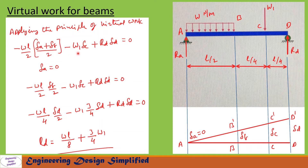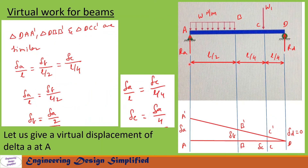Now let us write the virtual work equation: −w·(L/2) × (average displacement = (δa + δb)/2) − W1·δc + Rd·δd = 0. Here δa = 0, so the equation becomes: −w·(L/2)·(δb/2) − W1·δc + Rd·δd = 0. Substituting δb = δd/2 and δc = 3δd/4 and simplifying, we get the reaction at D: Rd = wL/8 + (3/4)W1.